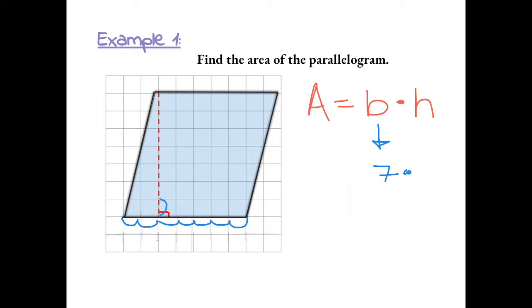Let's count the size of the height, which is 1, 2, 3, 4, 5, 6, 7. So the area of this parallelogram is 7 times 7, which equals 49 units. And area is always squared, so it's 49 units squared.